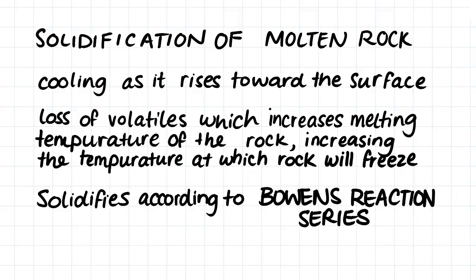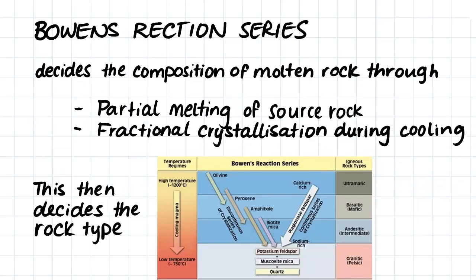The temperature at which the rock will begin to solidify depends on its composition, and it does this according to Bowen's reaction series. If you're not sure about Bowen's reaction series or the different types of magma composition, then maybe go and watch the last two videos in the previous section. But just briefly, Bowen's reaction series decides the composition of molten rock as it determines what sort of partial melting of the source rock will occur, and it decides the fractional crystallization that will occur during the cooling.